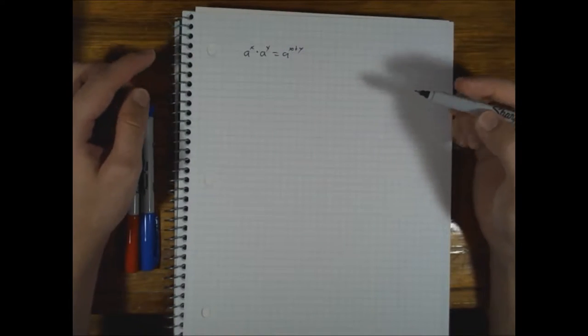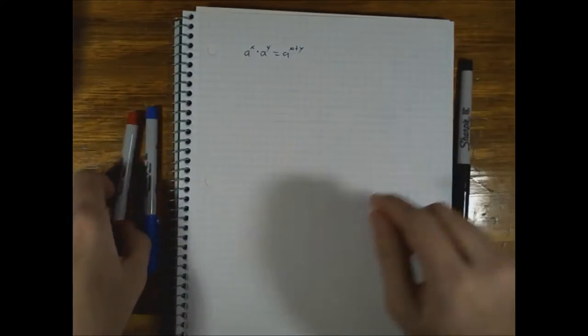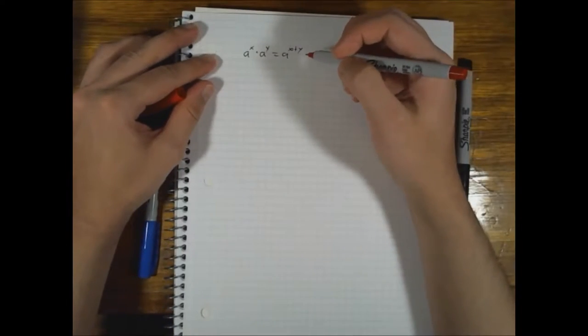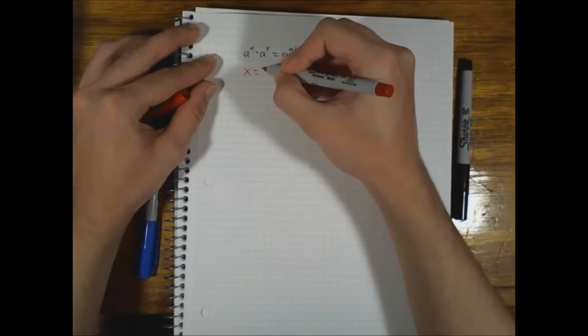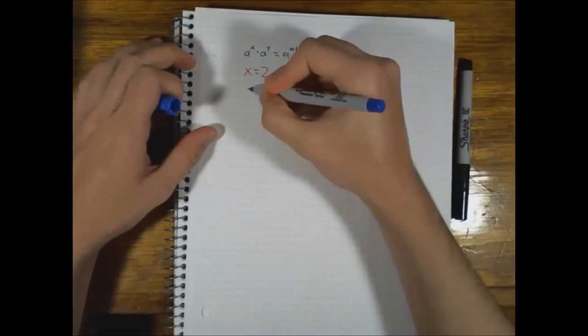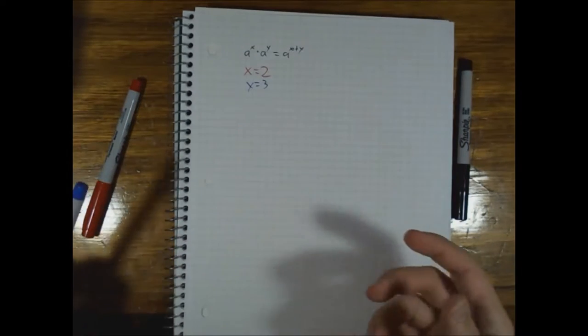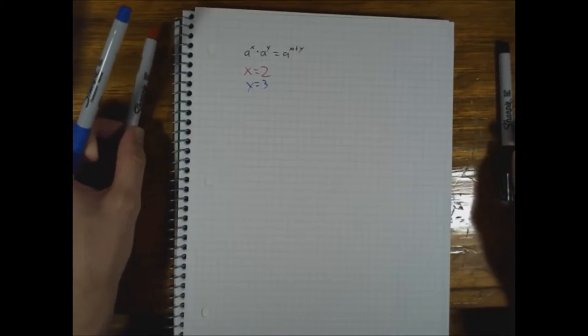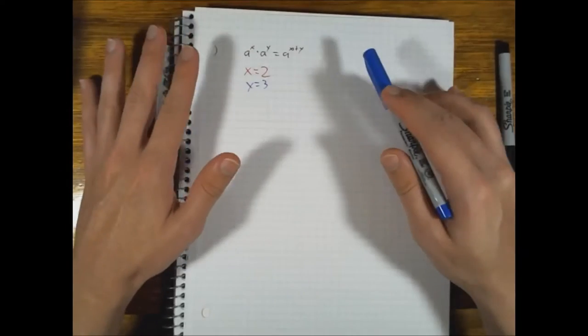And what we're going to do is we're actually going to take x and y and we're going to substitute. For those of you playing along at home, normally you use variables like this to represent stuff in generics, but what we're going to do is substitute x and y. We're going to do x equals 2, we're going to do y equals 3, because I really don't want to write out a whole bazillion copies of a. We're just going to make this life very simple.